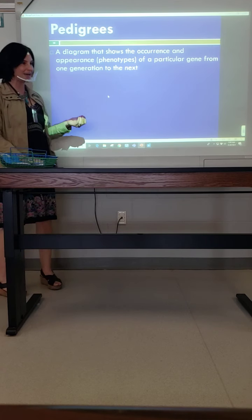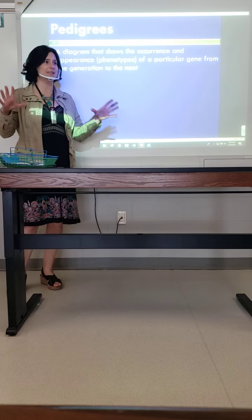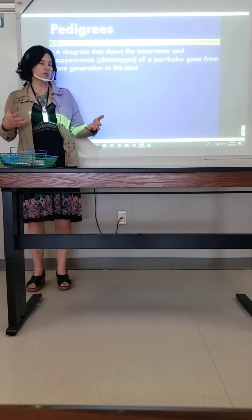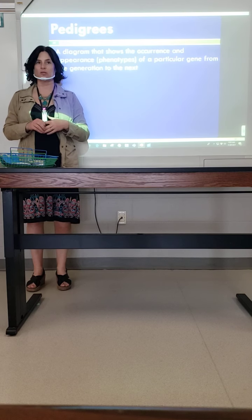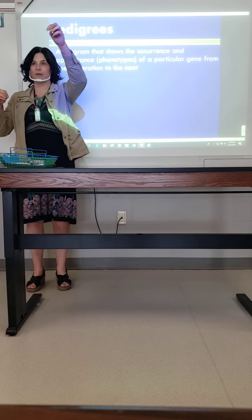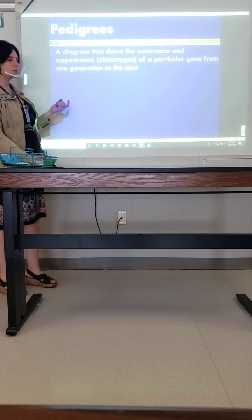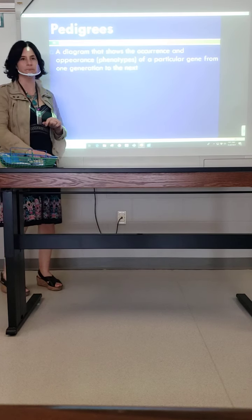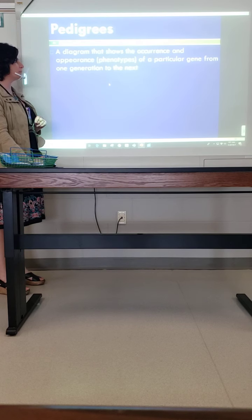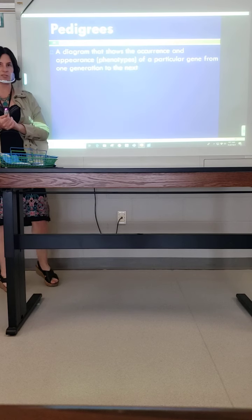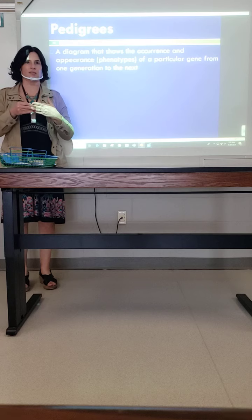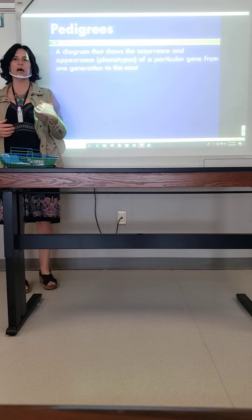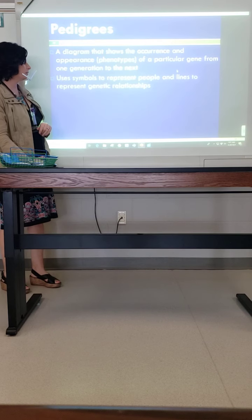The last topic is pedigrees. If you have a registered dog, you might have the dog's pedigree. On horse registration papers, it has their pedigree — their name, their parents, their grandparents, great-grandparents, and it keeps going. A pedigree shows generations coming from one person going back. It's a diagram that shows the occurrence and appearance of phenotypes of a particular gene from one generation to the next. The difference with these pedigrees is they show genetic information, so we can actually apply genetics to it.